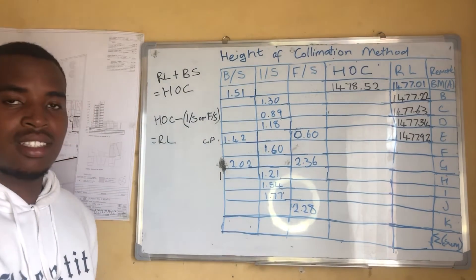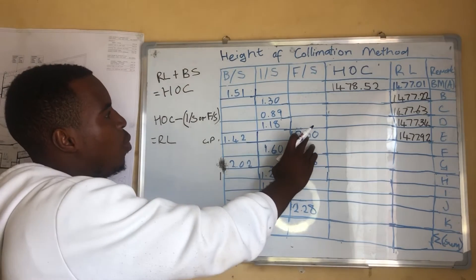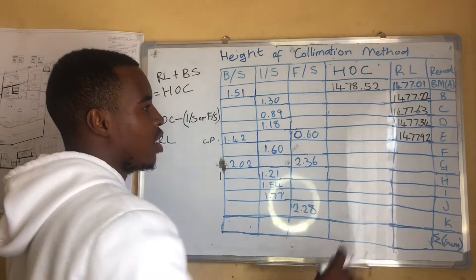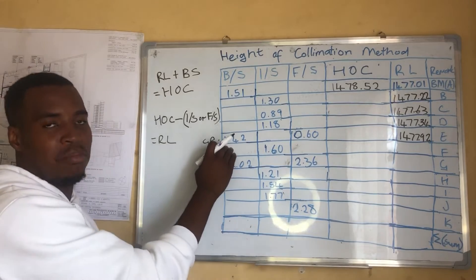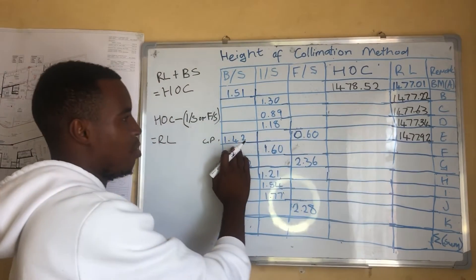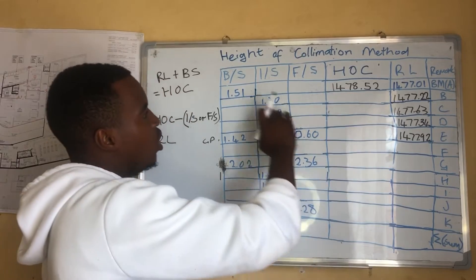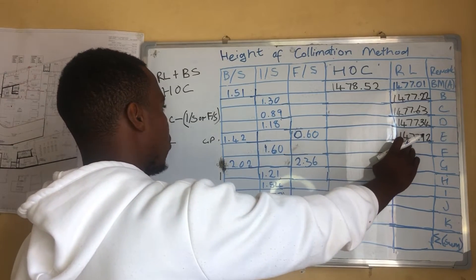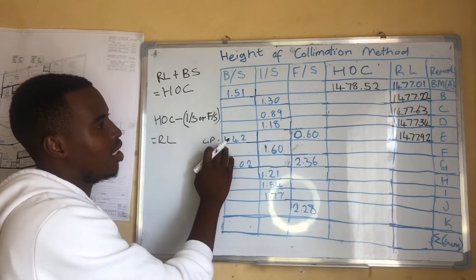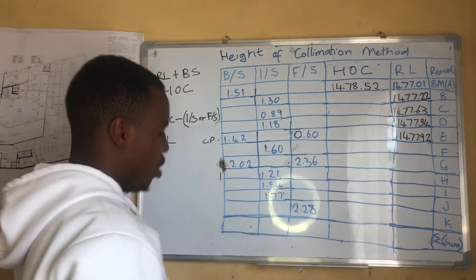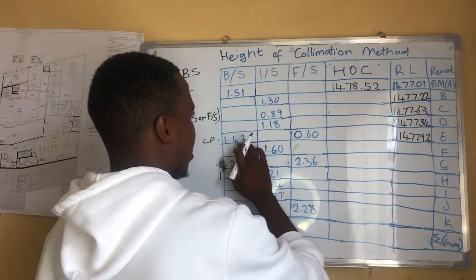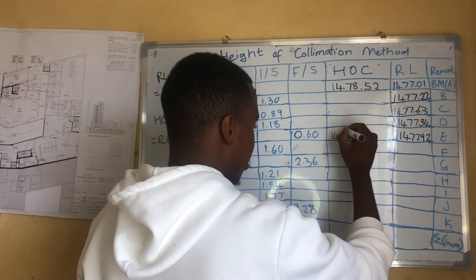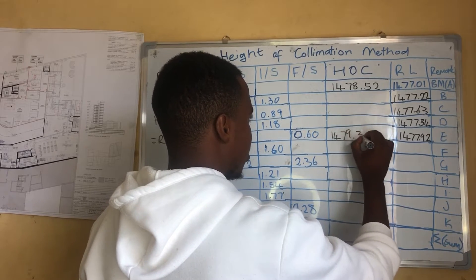Now remember it is our change point again — we discussed what the change point is in our last discussion. When you reach where the foresight ends and you restart, using it as a backsight, you take the Reduced Level and add the backsight. So for the second run, we say the Reduced Level at E plus the backsight at E gives us the Height of Collimation. We get 1479.34.